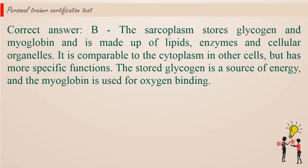Correct answer b. The sarcoplasm stores glycogen and myoglobin and is made up of lipids, enzymes and cellular organelles. It is comparable to the cytoplasm in other cells, but has more specific functions. The stored glycogen is a source of energy, and the myoglobin is used for oxygen binding.